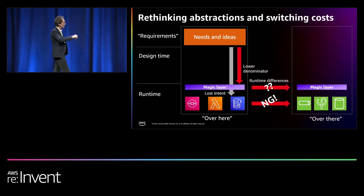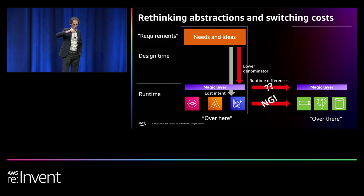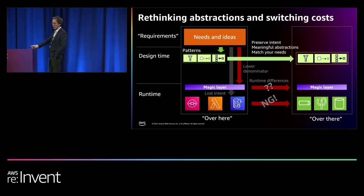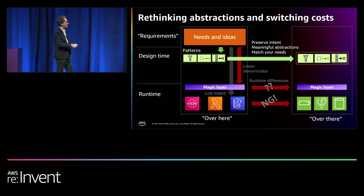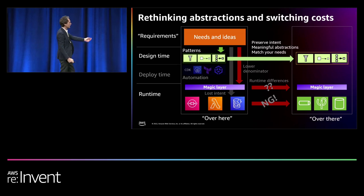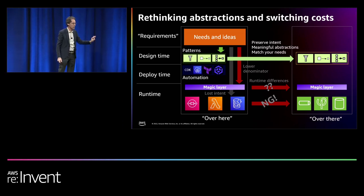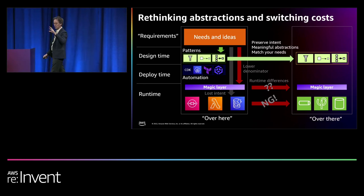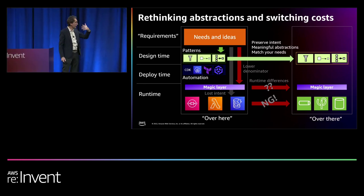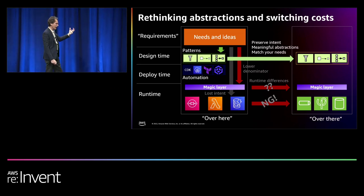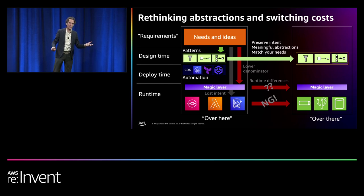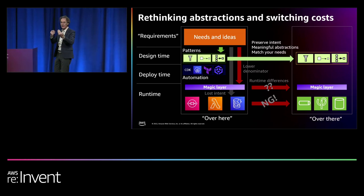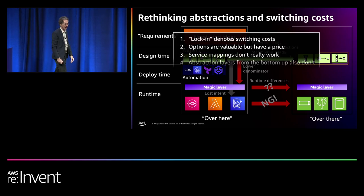Coming back to the picture: service mapping wasn't so great; magic abstraction layers have some issues. Two great techniques you can use: first, increase your velocity — higher velocity means lower switching costs. Second, don't skip capturing design intent. Your architecture and design isn't just your service selection; there's much more in there. Patterns can help you capture that, and if you even manage to code those patterns in CDK or Pulumi, then you have a much better starting point. The nice thing is that helps you today — it's a better way of building software — and it also reduces your switching costs.